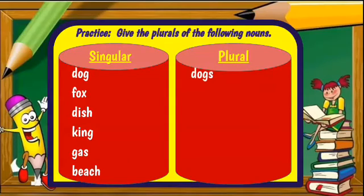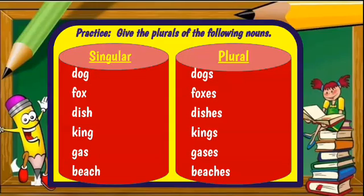So dog, dogs. Fox, foxes. Notice the s and the es endings. Dish becomes dishes. King, kings. Gas, gases. And beach becomes beaches. Thank you.